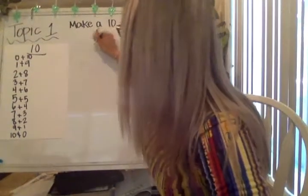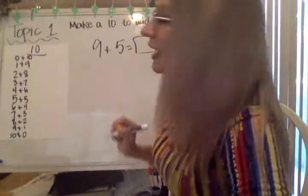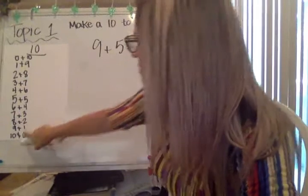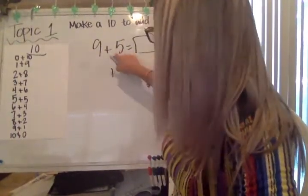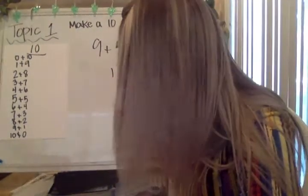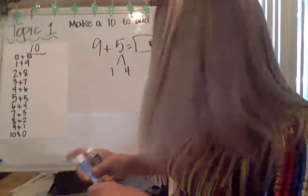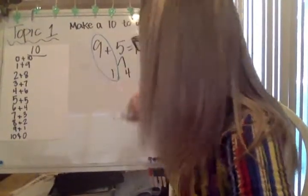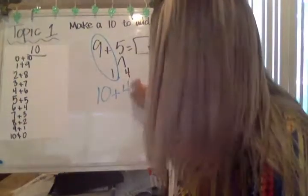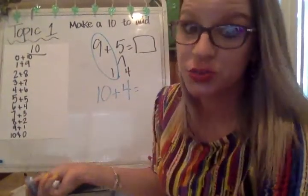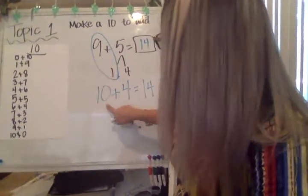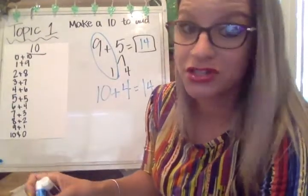What if my equation is nine plus five and I want to make a 10 to add? Nine partner pairs with one, so I'm going to take one out of this five. One plus something equals five — the missing number would be four. Next, nine plus one is 10, and then the other number I had is four. So 10 plus four, which is super easy, is 14 — that's the sum of nine plus five. My new equation would be 10 plus four. That's how you show that you made a 10.